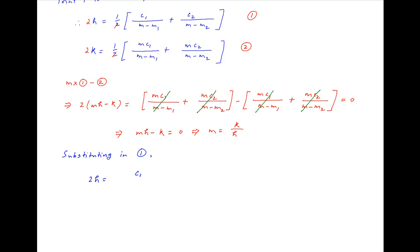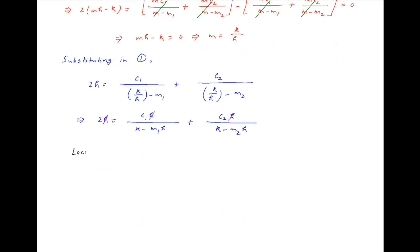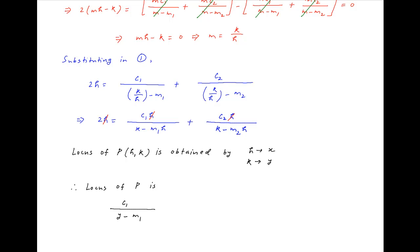Substituting m equals K upon H into equation 1, we get 2H equals c1 upon (K upon H minus m1) plus c2 upon (K upon H minus m2). Notice that H cancels across the left-hand side and the right-hand side. The locus of the point P with coordinates (H, K) can be obtained by replacing H with x and K with y, giving the required locus: c1 upon (y minus m1x) plus c2 upon (y minus m2x) equals 2.